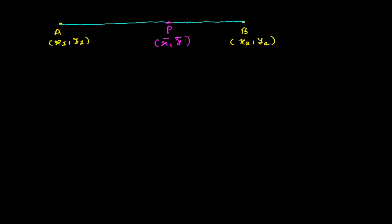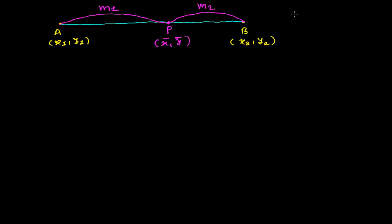AP and PB may be equal or may not be equal. Looking at the figure, AP looks bigger than PB, but we don't know exactly how many parts each piece is. Sometimes AP will be smaller and PB larger. So let's suppose AP is m1 parts and PB is m2 parts — point P is dividing the whole line AB into the ratio m1 : m2.